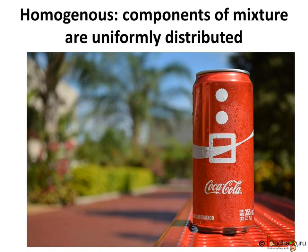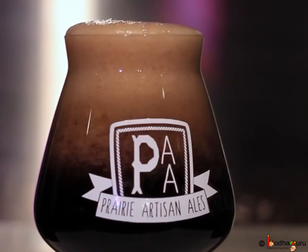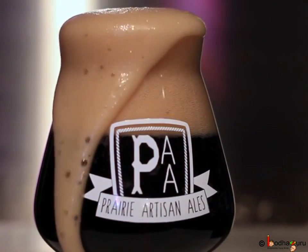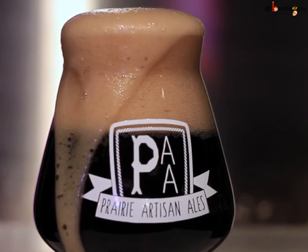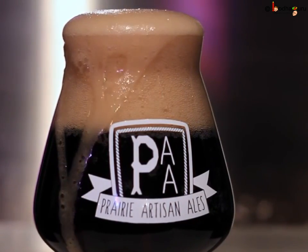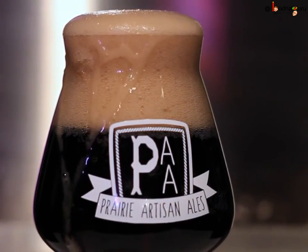Many solutes dissolve in water to form the soft drink you consume — like sugar, water, carbon dioxide, artificial colours, preservatives, etc. These soft drinks taste the same throughout the whole bottle. So it is a homogeneous mixture, meaning the components of the mixture are uniformly distributed throughout it.